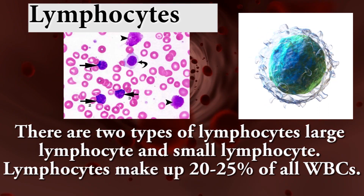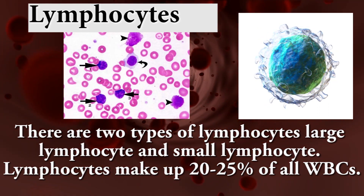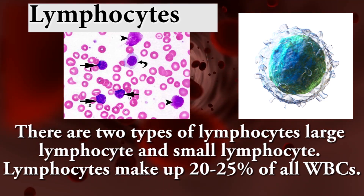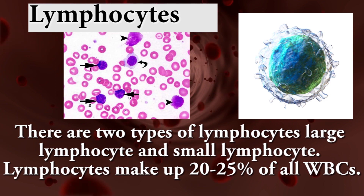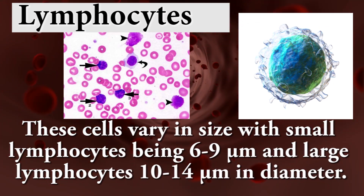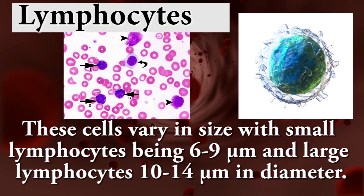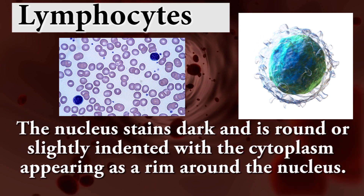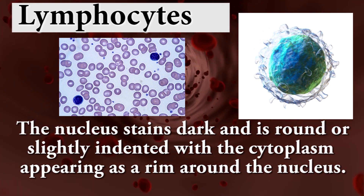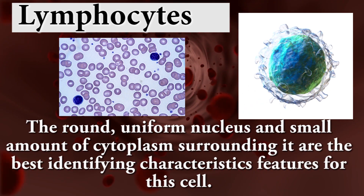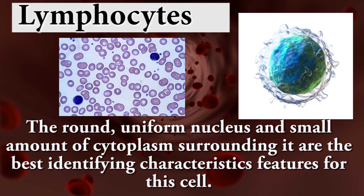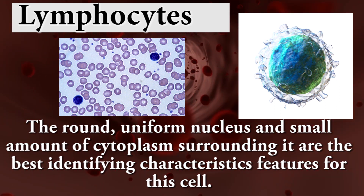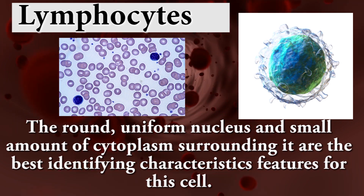Lymphocytes — there are two types: large lymphocyte and small lymphocyte. Lymphocytes make up 20 to 25% of all WBCs. These cells vary in size, with small lymphocytes being 6 to 9 micrometers and large lymphocytes 10 to 14 micrometers in diameter. The nucleus stains dark and is round or slightly indented, with cytoplasm appearing as a rim around the nucleus. The round uniform nucleus and small amount of cytoplasm surrounding it are the best identifying characteristic features.